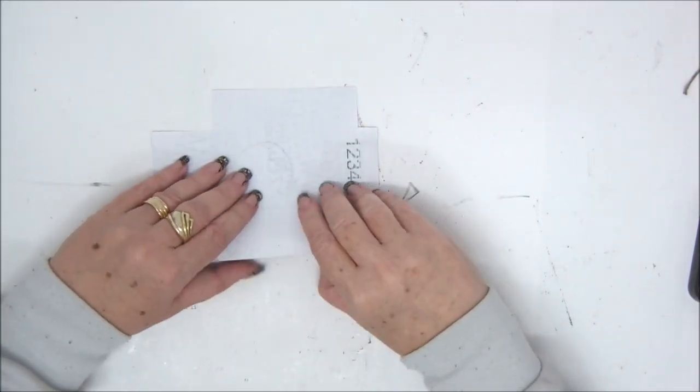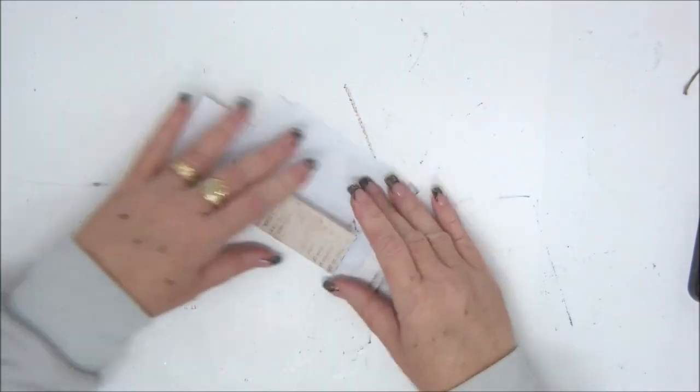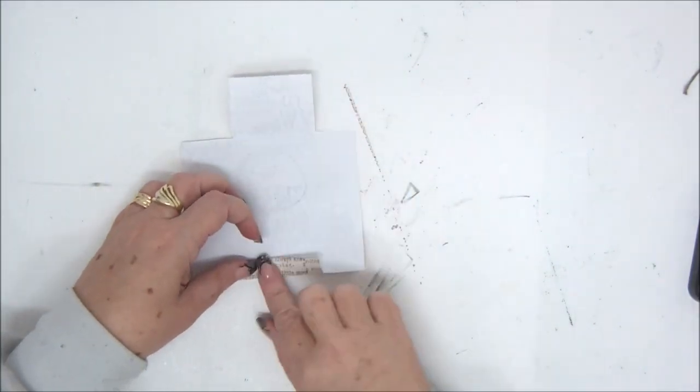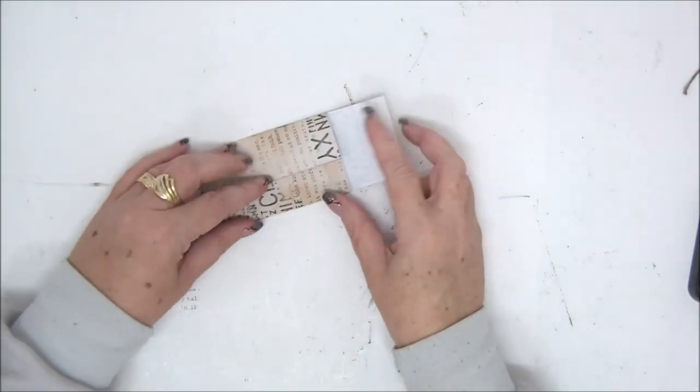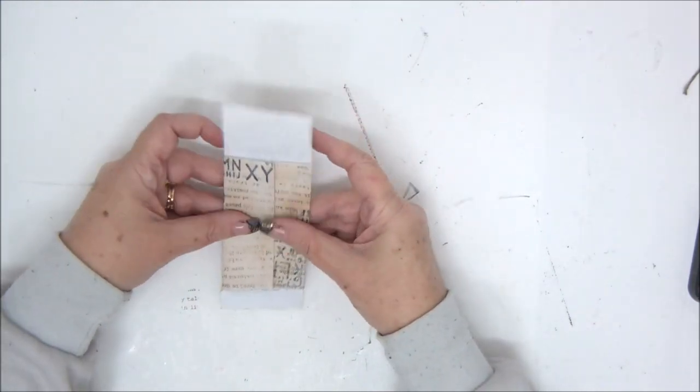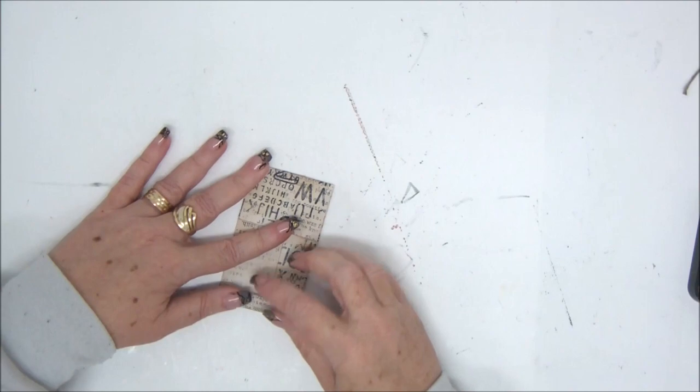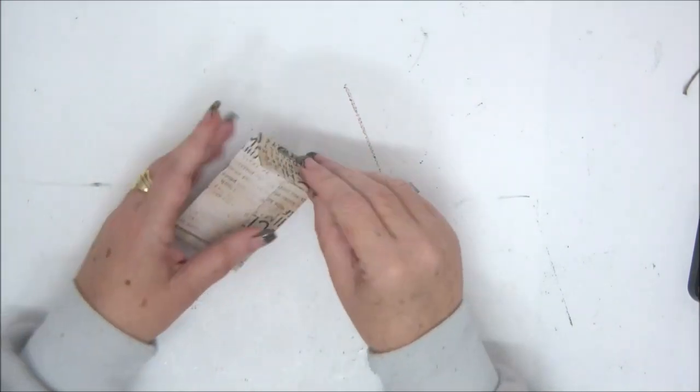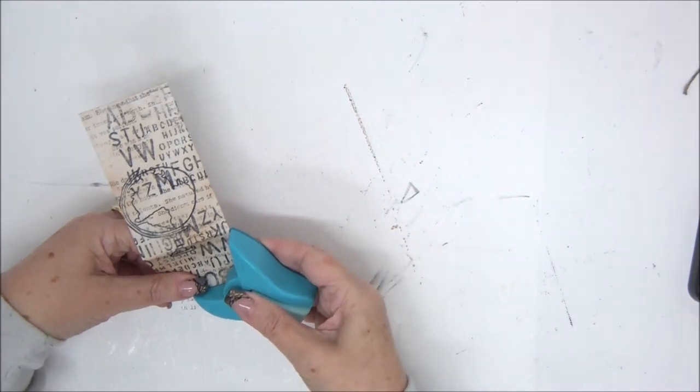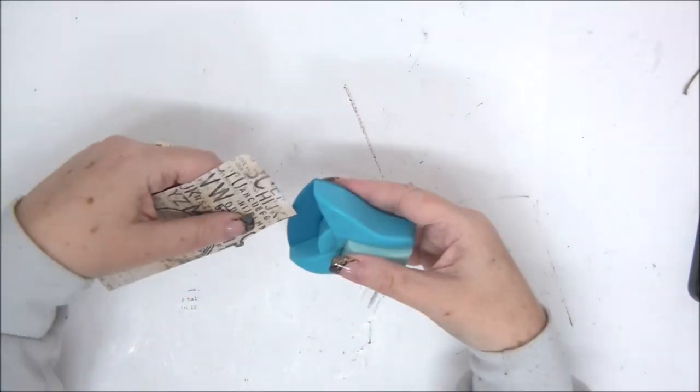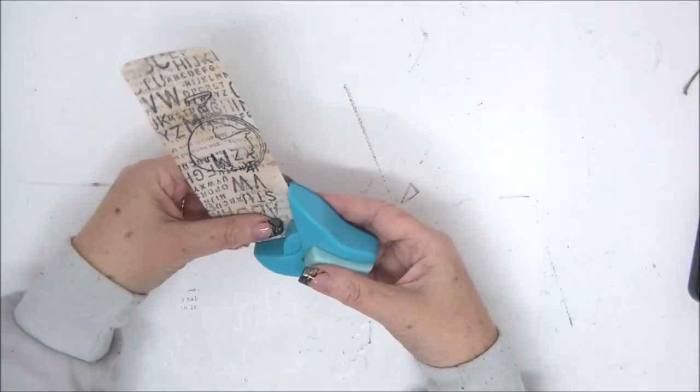I'm going to fold the score lines first. Make sure you fold them straight. And now go ahead and round the corners. It will be easier when this is folded towards the inside like this. So this is the top and this is the bottom. I'm going to bring my round corner punch and round corners on the top and the bottom.